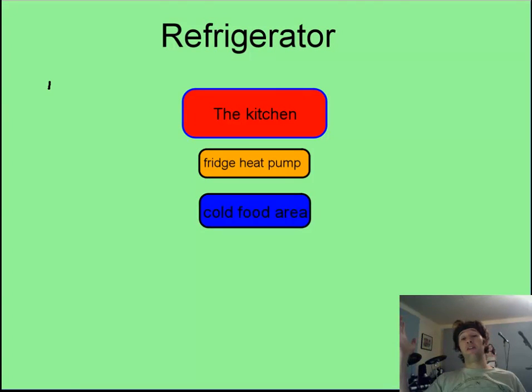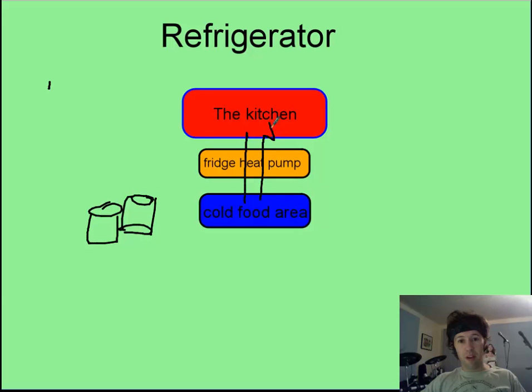You may think you violate the second law of thermodynamics every day, because you come home and in your cold food area, you put some warm cans of soda. And then, from the cold food area, the fridge heat pump steals heat from them and dumps it into the hotter kitchen, out the back of the fridge. I violated the second law, and heat has flowed spontaneously from cold to hot.